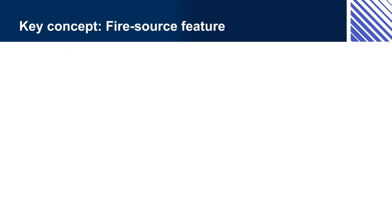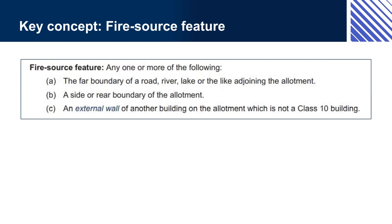Key Concept: Fire Source Feature. A fire source feature for a wall is a point from which a fire could spread to the building, or to which a fire could spread from the building. This includes the far boundary of a road, river, or lake which adjoins the allotment — e.g., an allotment boundary that is on the other side of a street. It can also be the side or rear allotment boundary, even if no building or structure is on the adjoining allotment.